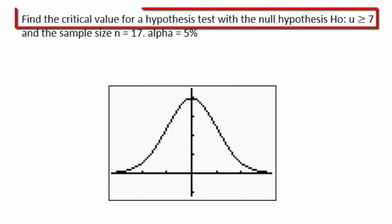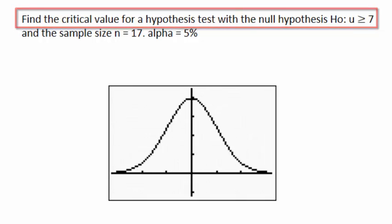For this problem, we're asked to find the critical value for a hypothesis test. The null hypothesis states that mu is at least 7, that is, greater than or equal to 7.